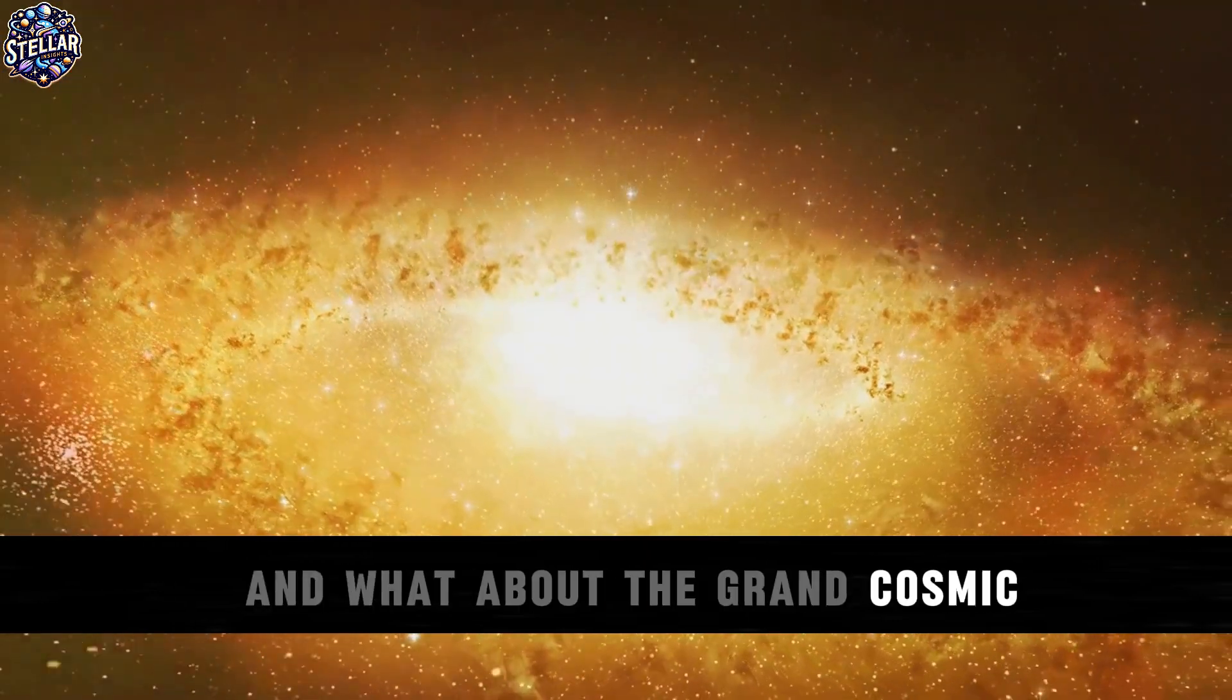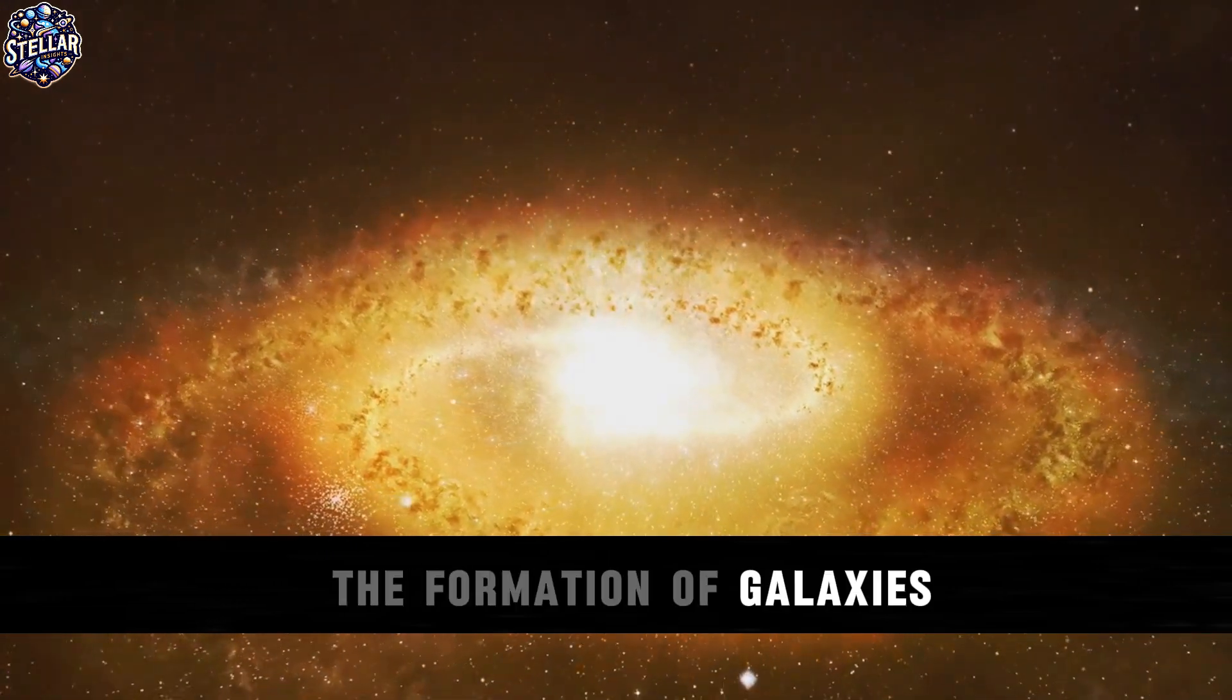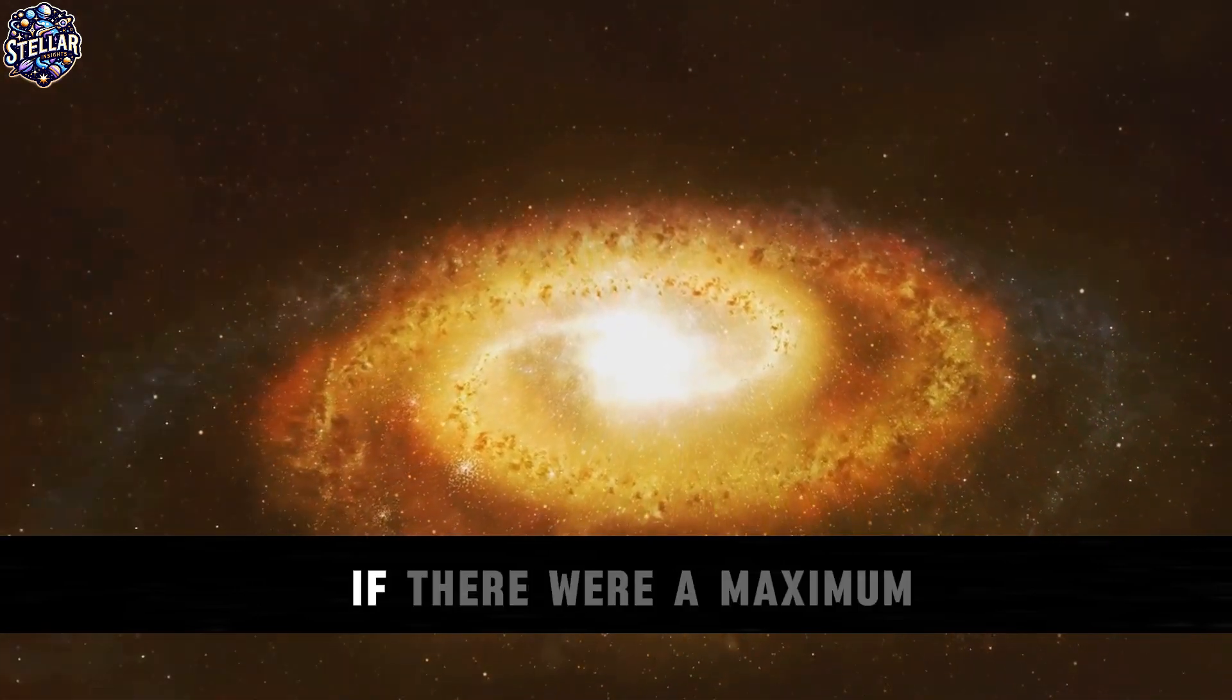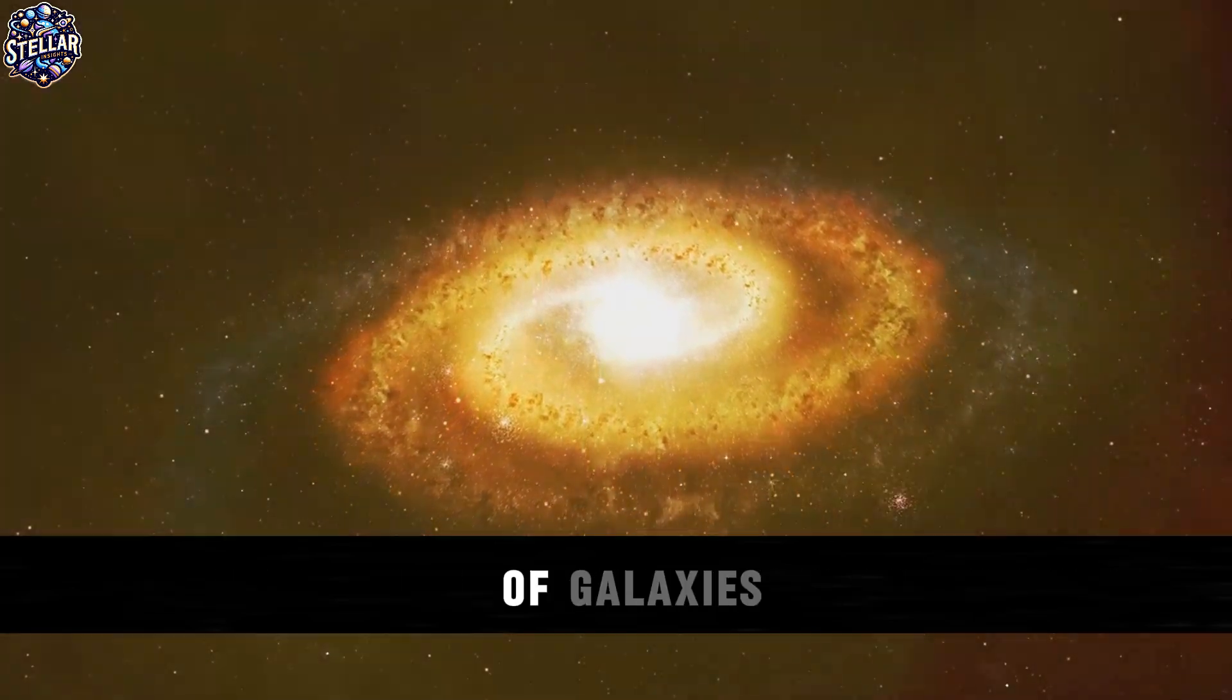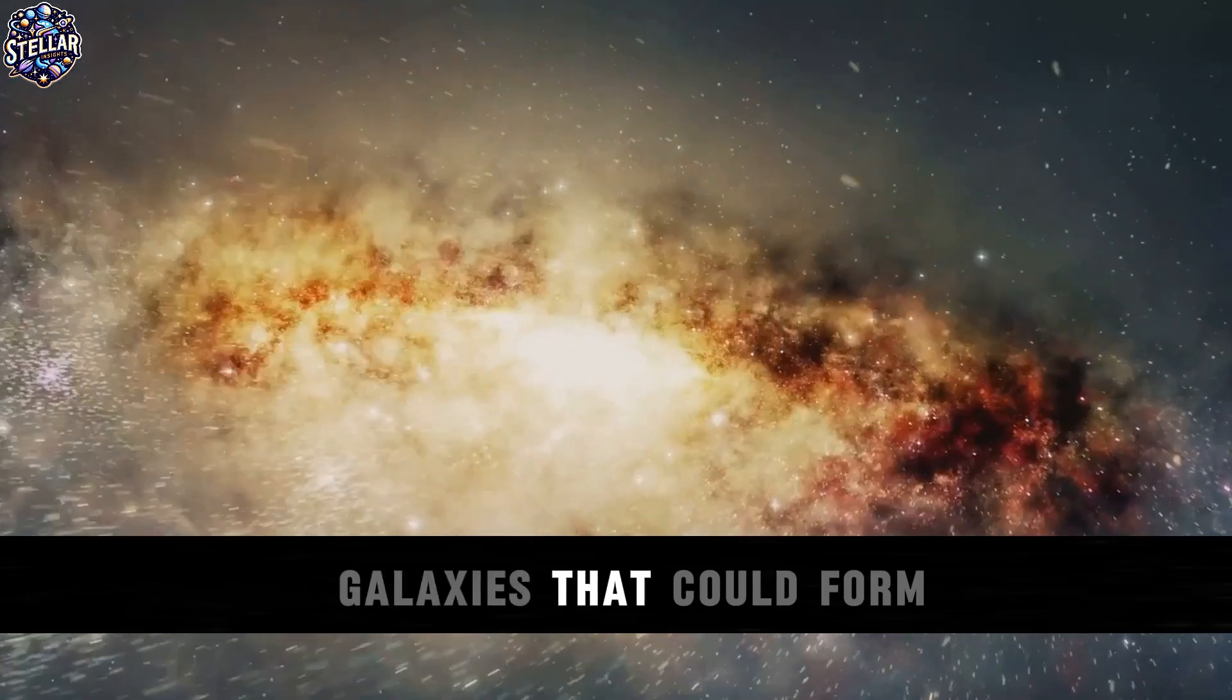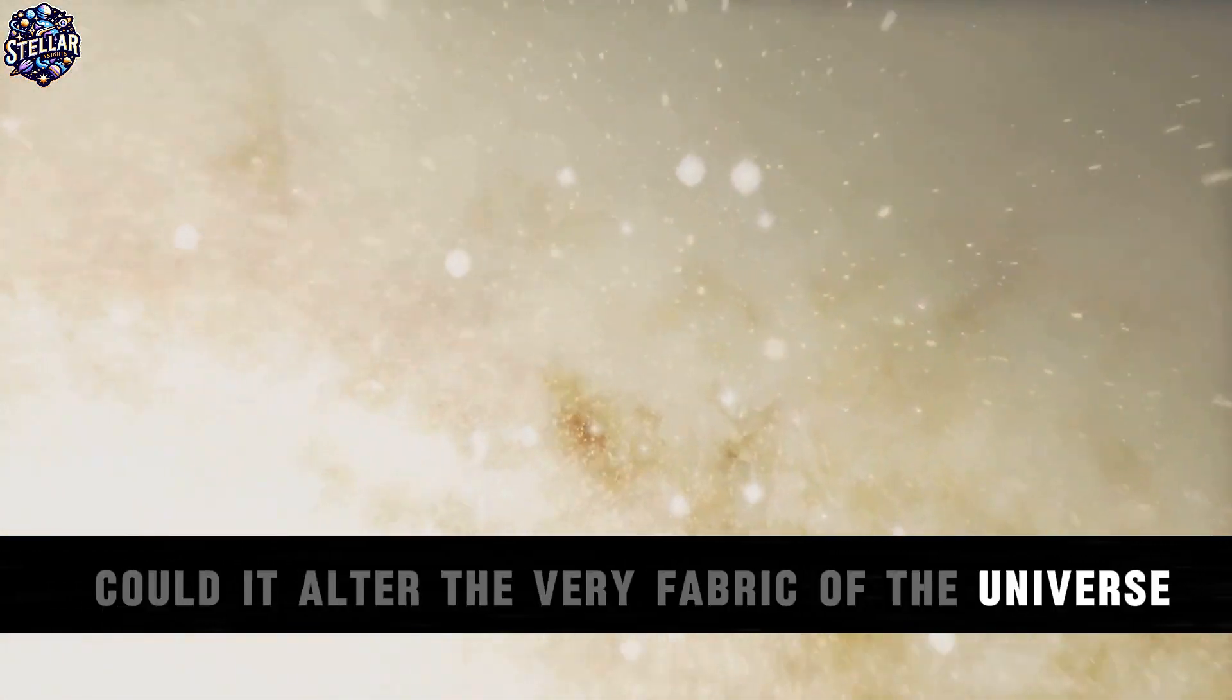And what about the grand cosmic structures? Galaxies. The formation of galaxies is a complex ballet of gas, dust, dark matter, and energy. If there were a maximum temperature, how might this affect the birth and evolution of galaxies? Could it restrict the types and sizes of galaxies that could form? Could it alter the very fabric of the universe as we know it?